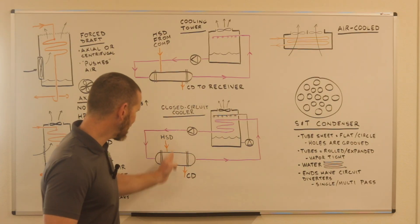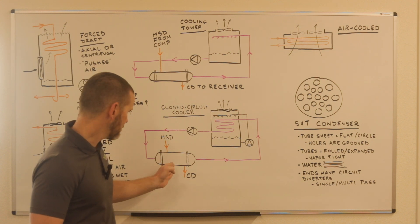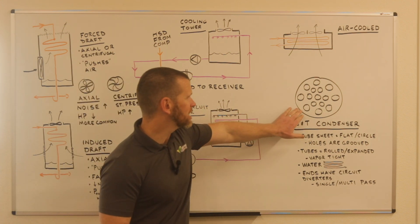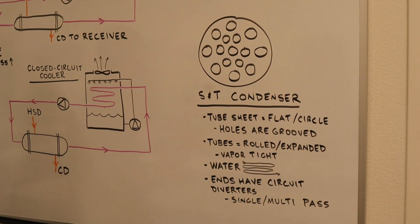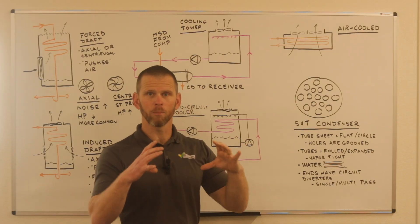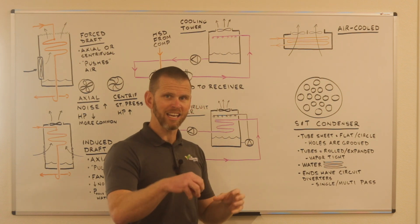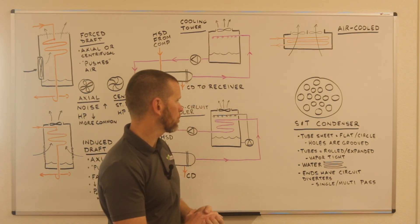Now, if we were to be able to slice this condenser in half, this heat exchanger in half, and look at it from the end, we would see something like this. What I've drawn here is the tube sheet. It's a circular piece of metal with holes cut into it that tubes will fit perfectly through.